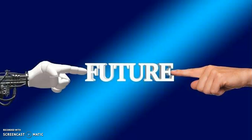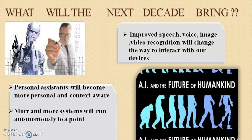There are some features and future scope that can apply to AI. The next generation of AI can improve speech, voice, image, and video recognition, changing the way we interact with devices. Personal assistants will become more personal and context-aware — for example, in the morning you could wake up and say, 'Hey Siri, where are my specs?' and it will reply. More and more systems will run automatically to a certain point.